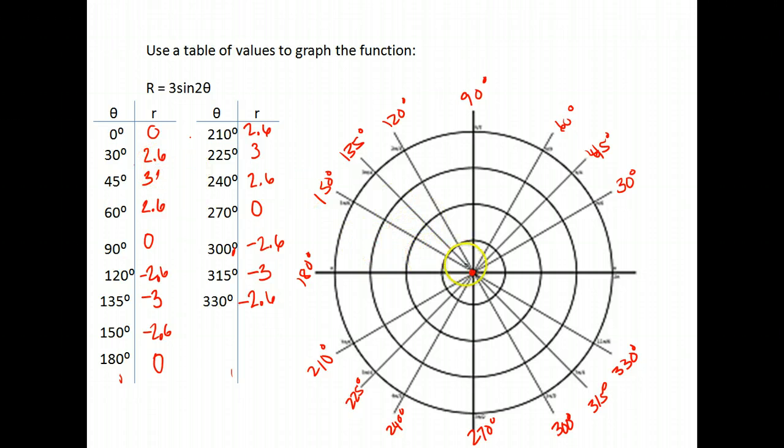30 and 2.6. So we open up to the 30 degree angle and we go out 1, 2, 0.6, so a little over 2 and a half. 45 and 3. So we open up to the 45 degree angle and we go out 1, 2, 3. 60 and 2.6. So we open up to the 60 and go out 1, 2.6 again. And 90, we're back to 0. So we open up to 90, go out 0. So notice the shape we get here.